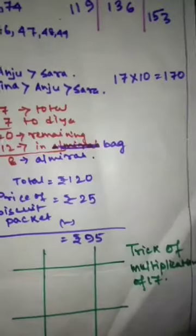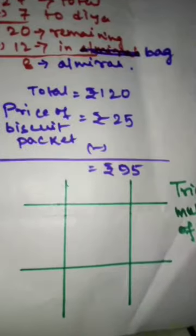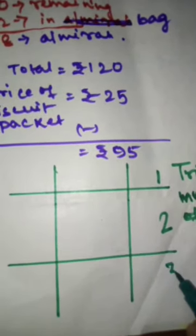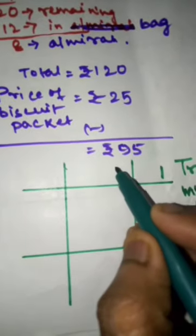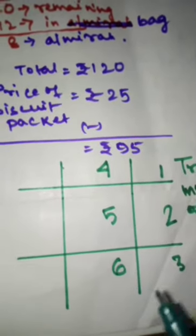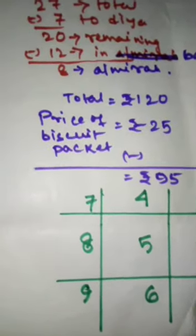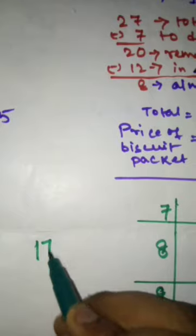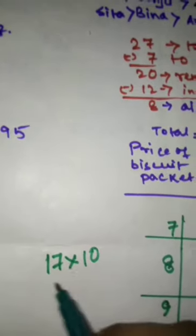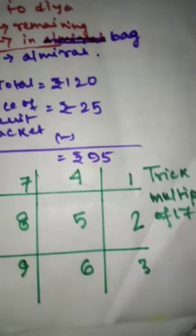Now for the trick of multiplication of 17, let's take a look at it. What you do, you start putting the numbers from here. You put here 1, you put here 2, you put here 3. Similarly, you put here 4, 5, 6, and put here 7, 8, 9. Basically you know that 17 into 10 equals to 170. This is known to you. So what you do for the rest of the numbers, you do this.